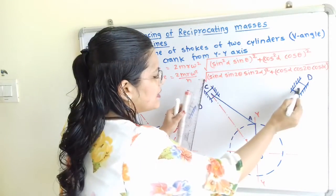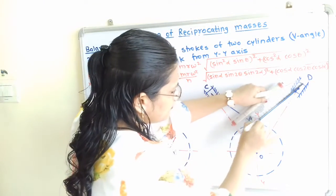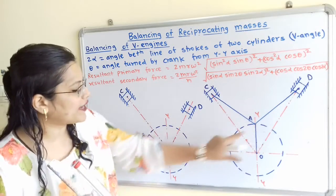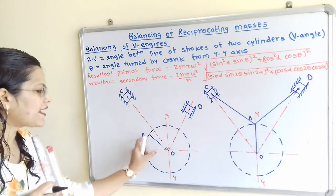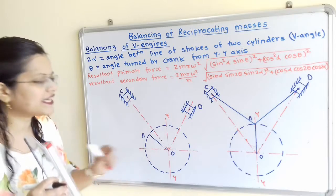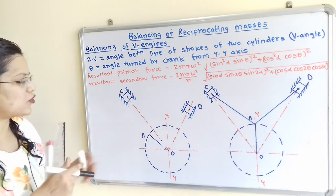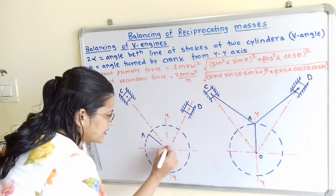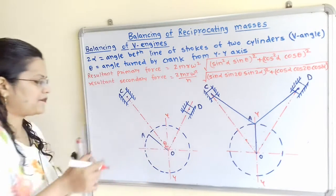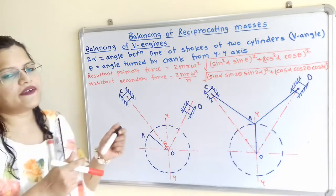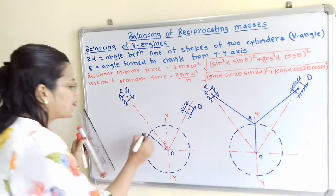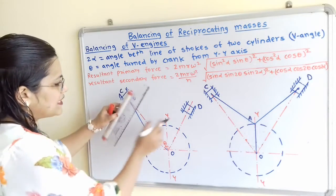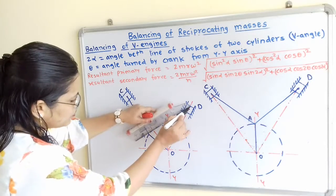For cylinder 2, the connecting rod is D to A. In the second diagram, the crank OA has turned through an angle theta from the vertical line YY. So the angle from O to A is theta. We then join the connecting rods at the common crank pin A — for cylinder 1 it is C to A, and for cylinder 2 it is D to A.